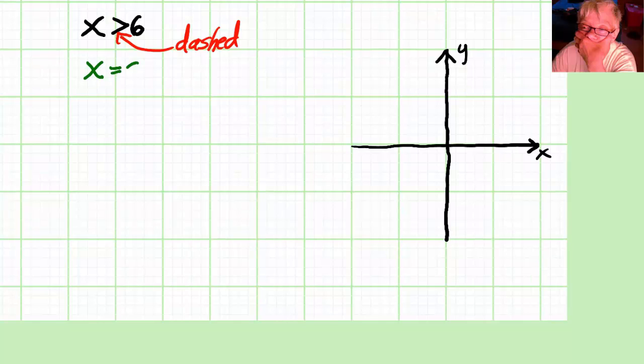So as always, let's turn the inequality into a line by substituting the equal sign for the inequality sign. Now this is the equation of a vertical line.